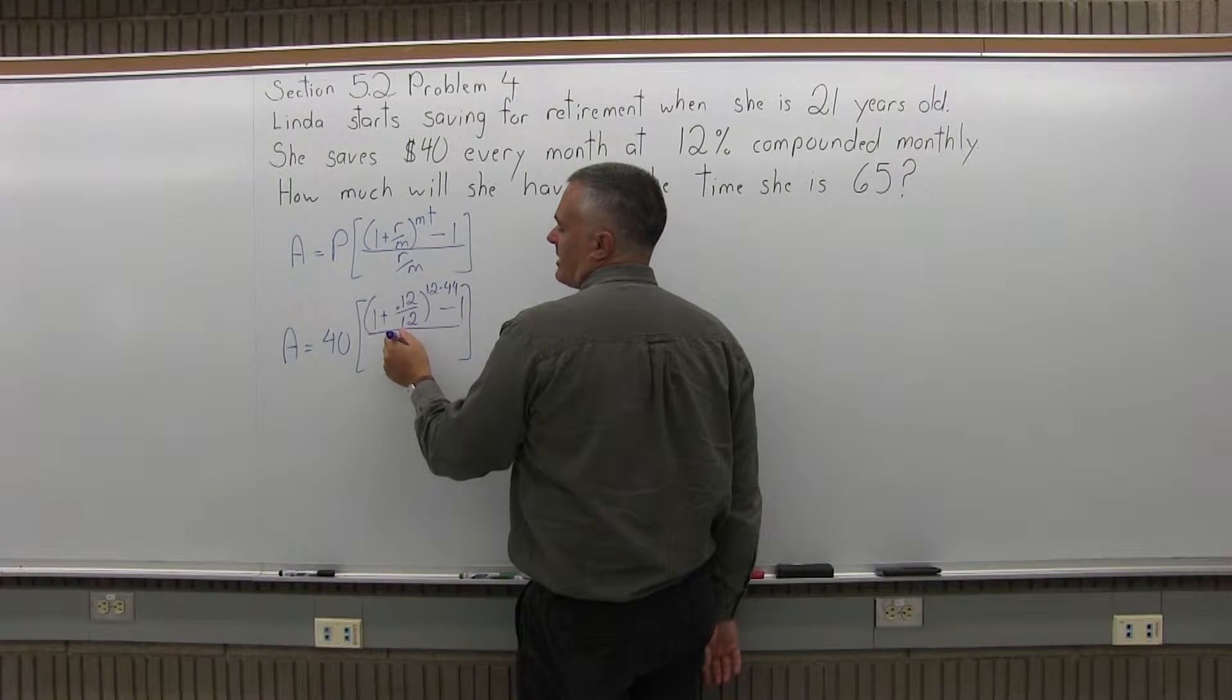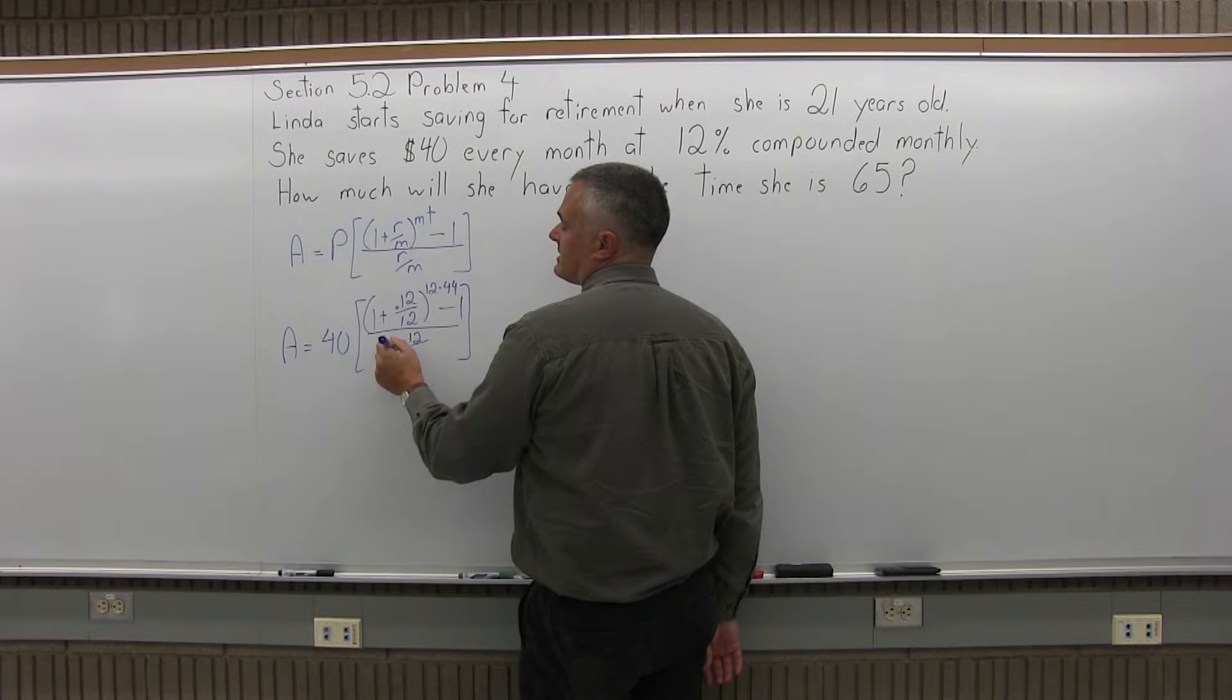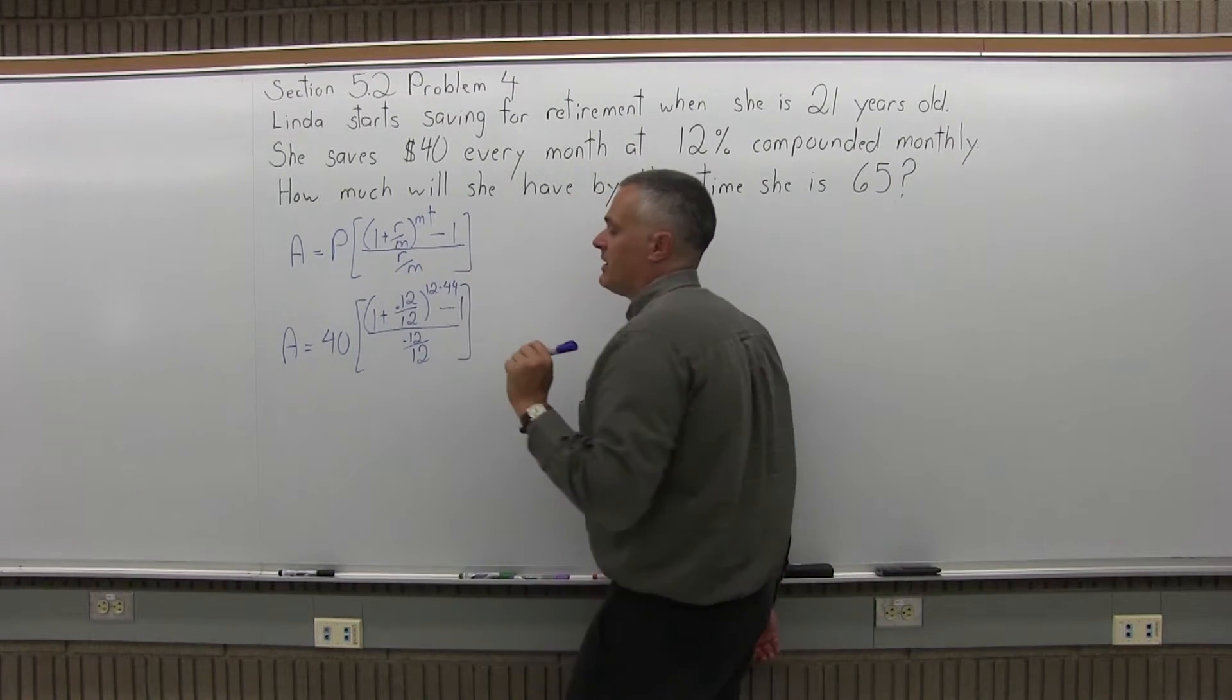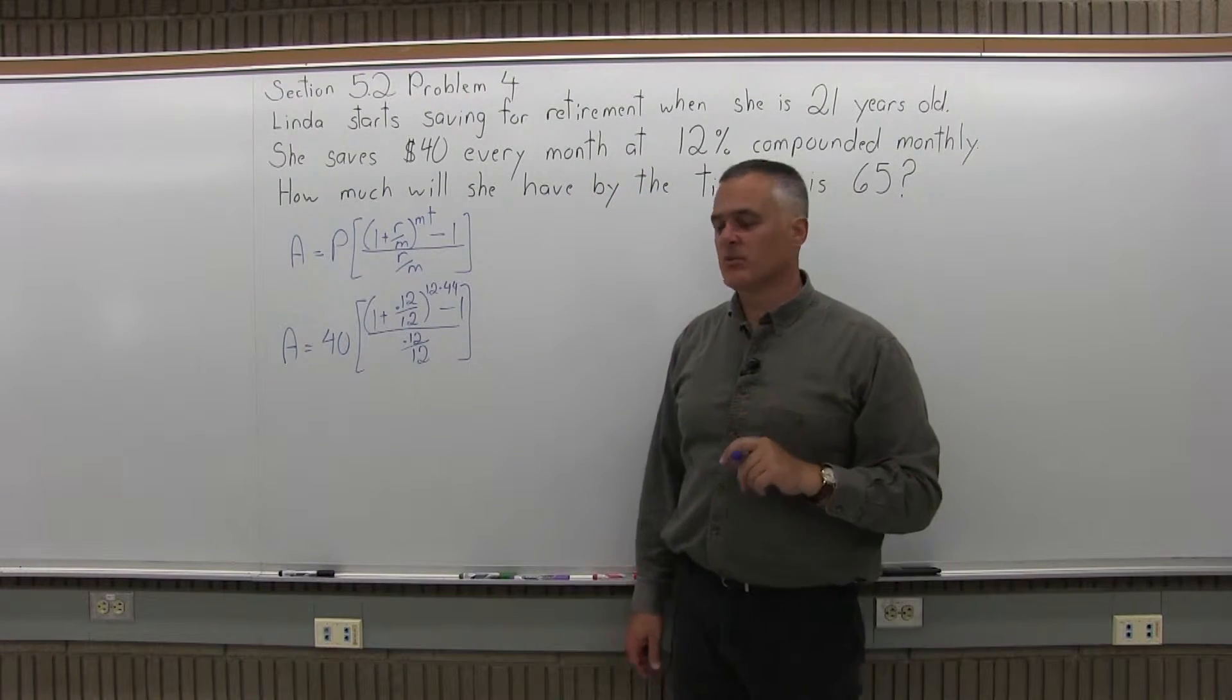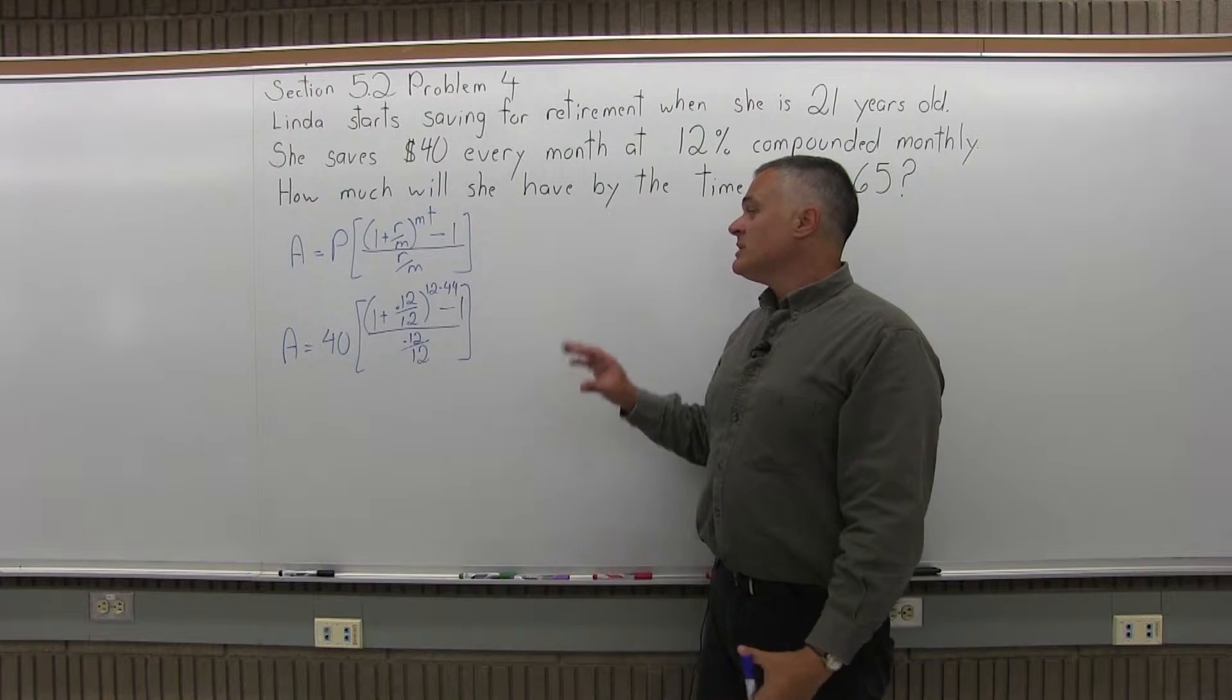And in the denominator, R over M. R is 0.12, the rate as a decimal. M is 12, the number of times compounded per year. For monthly compounding, M would be 12. So the formula is filled in now.